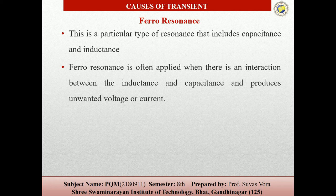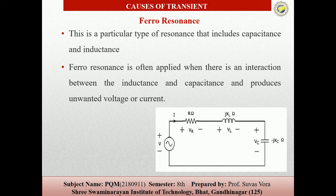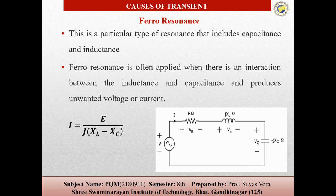For this, here is the circuit where resistance, inductor, and capacitance are placed, and the RLC circuit or network is applied. The current in the network is I = E / (jXL − XC), the standard equation, where E is the source voltage, XL is the inductive reactance, and XC is the capacitive reactance.